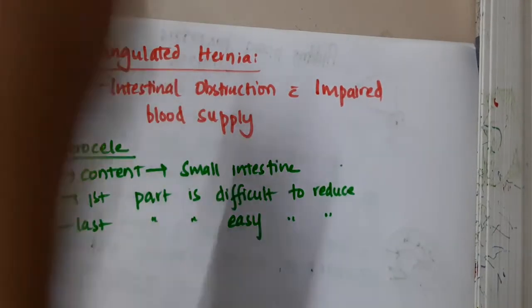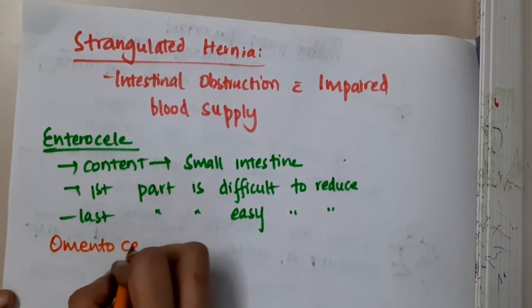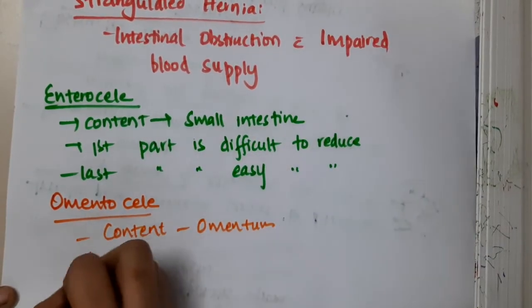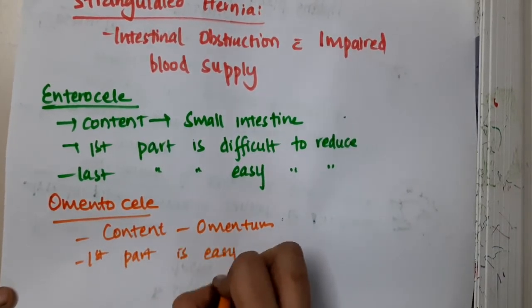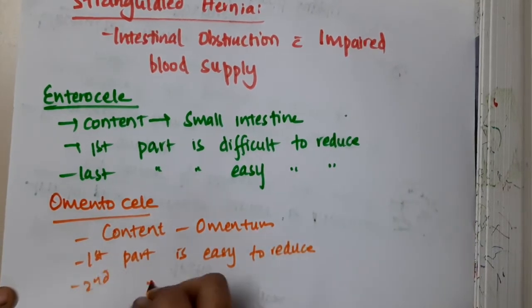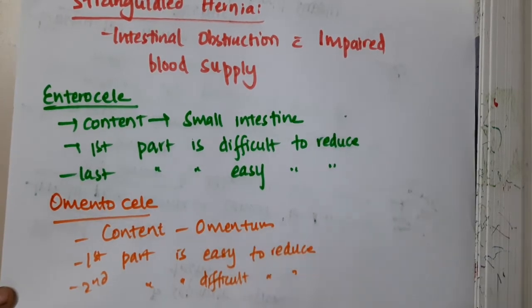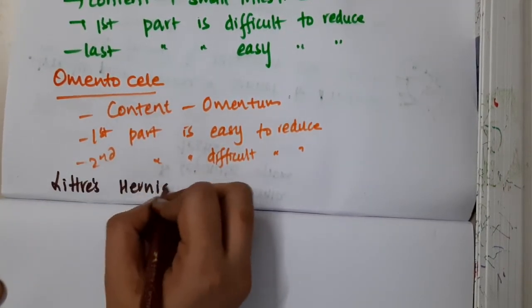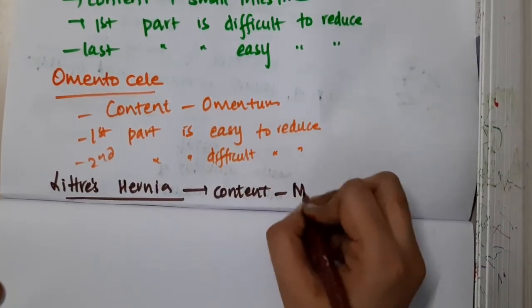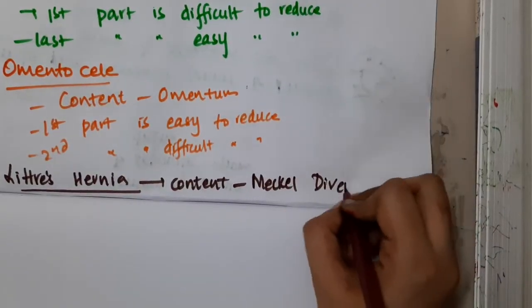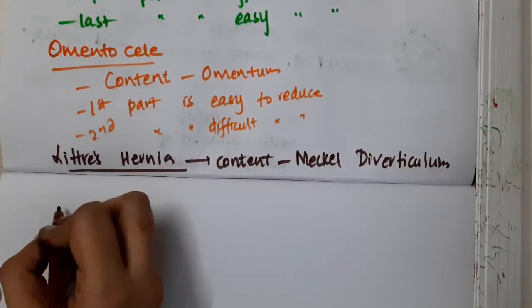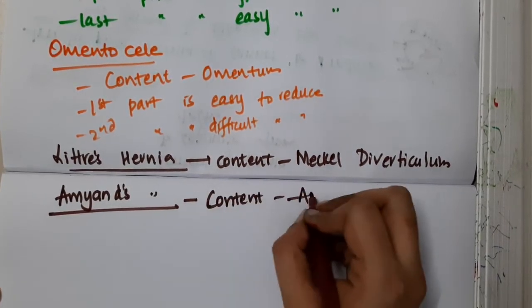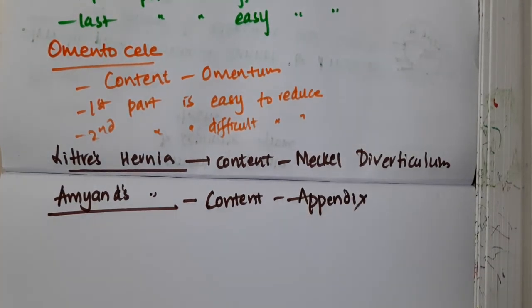The next type is omentocele. As the name says, the content is omentum. In omentocele, the first part is easy to reduce, whereas the second part is difficult to reduce. Then we have Littre's hernia: the content of Littre's hernia is Meckel's diverticulum. Then we have Amyand's hernia: if the content is the appendix, then we call it Amyand's hernia. These are the different named hernias. Thank you.